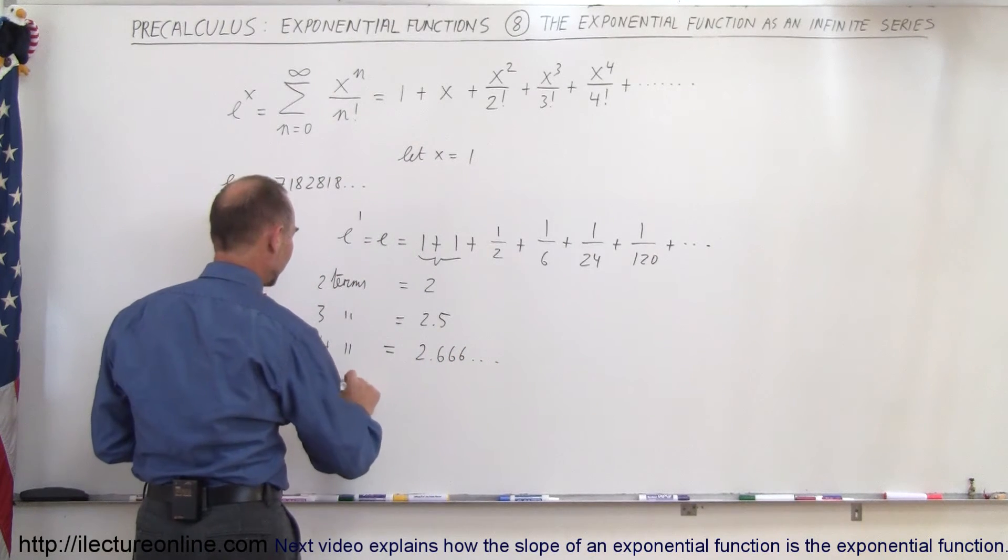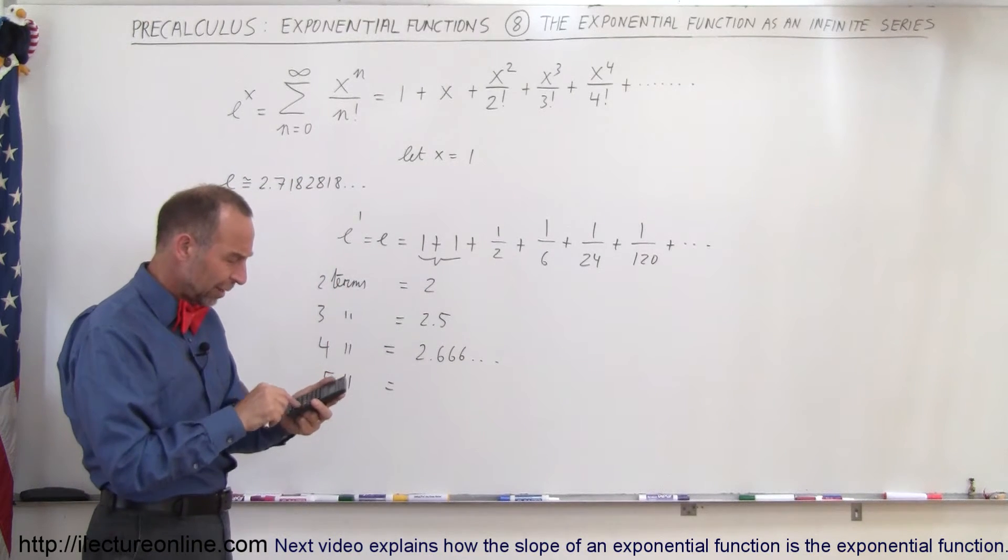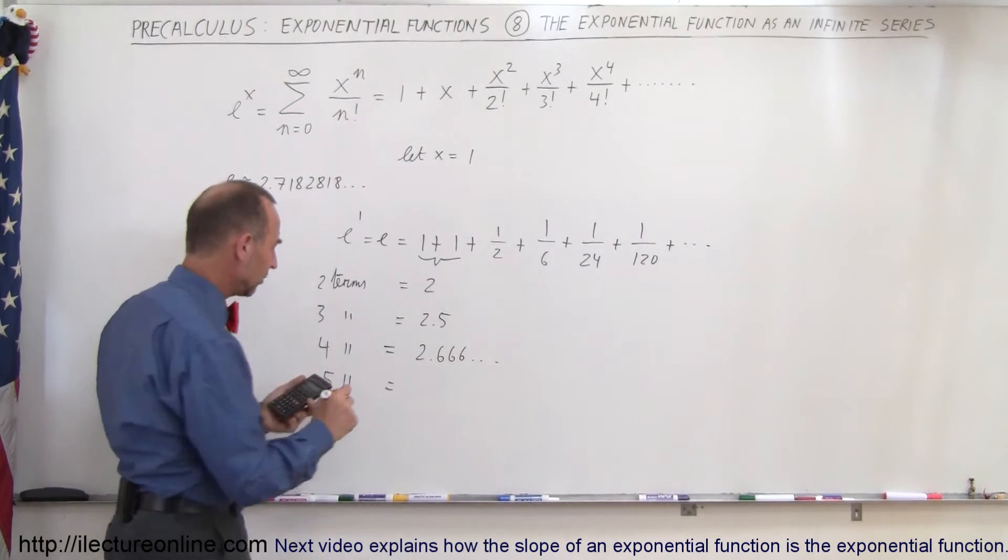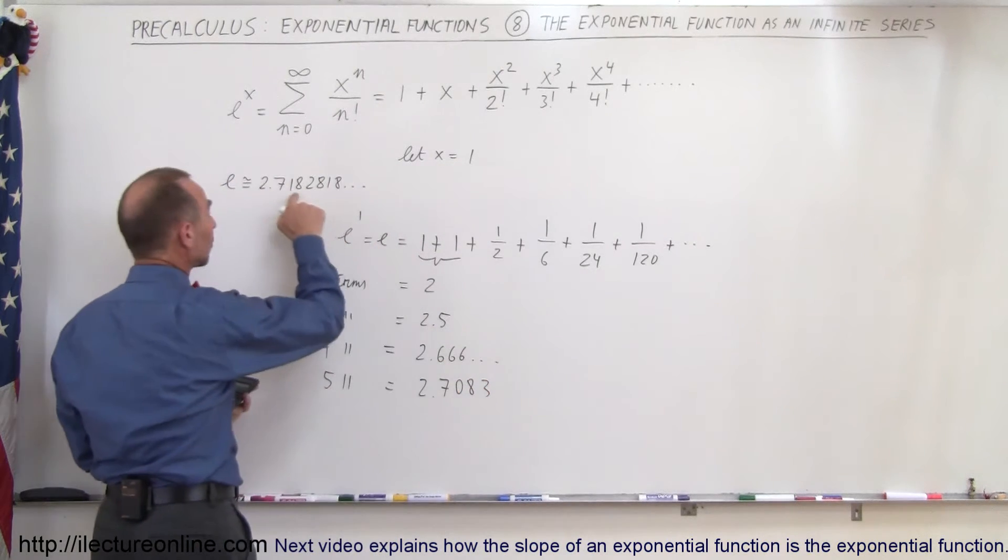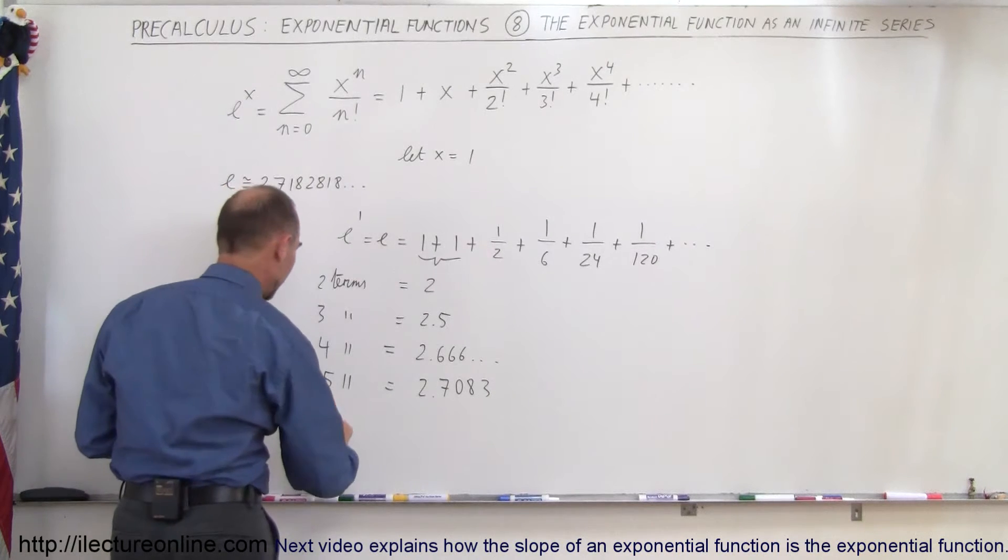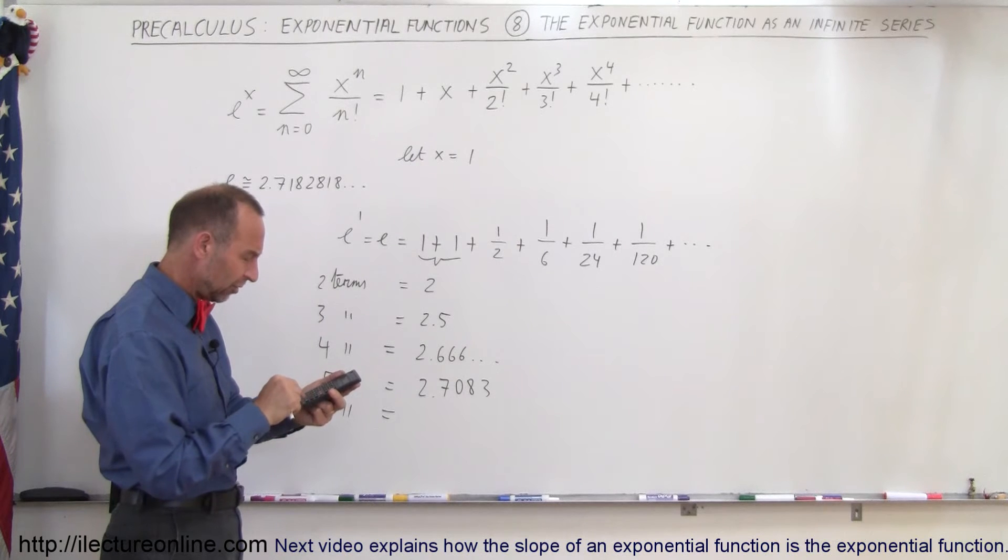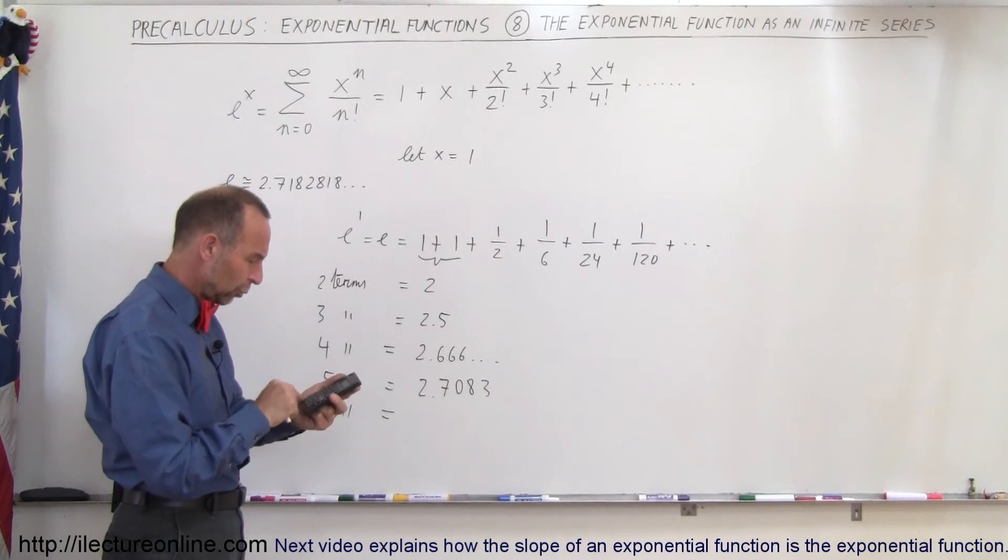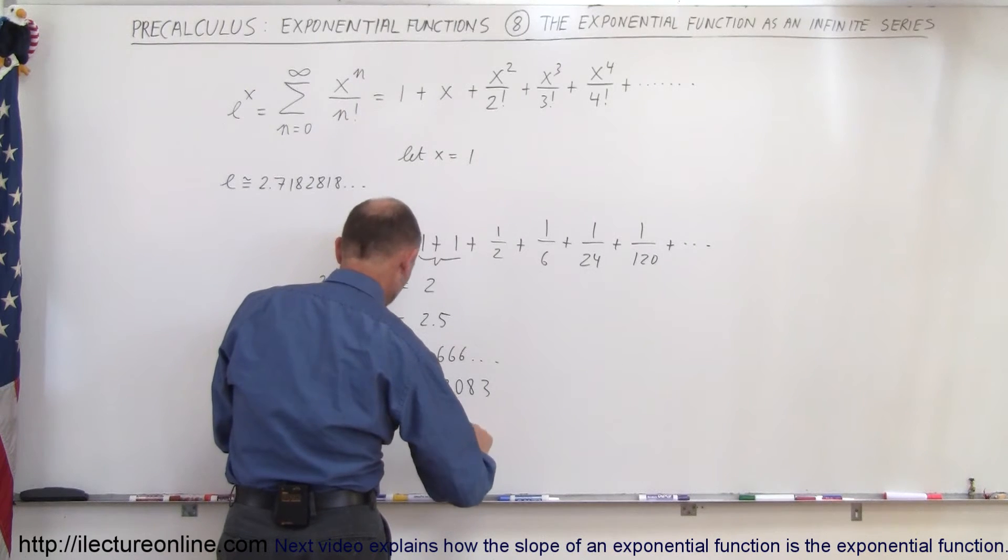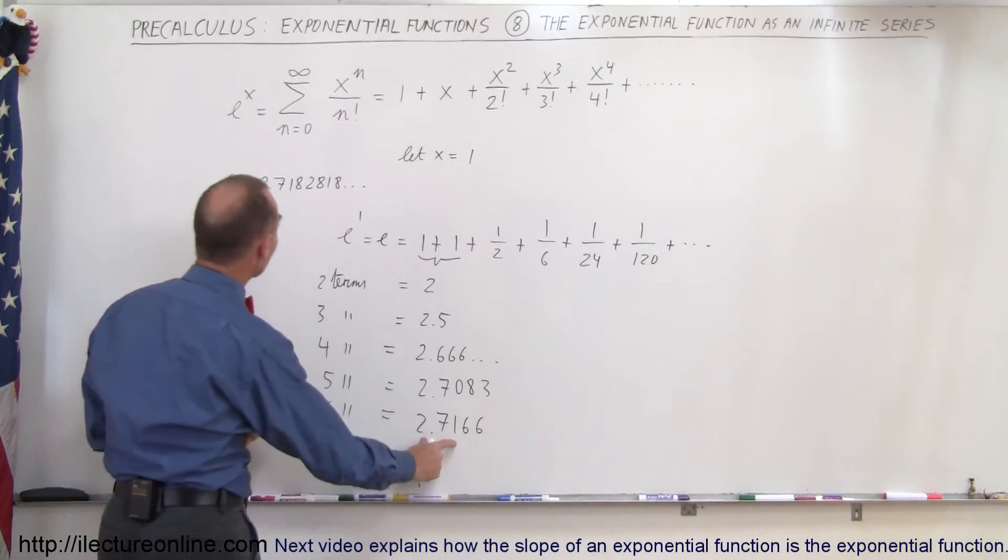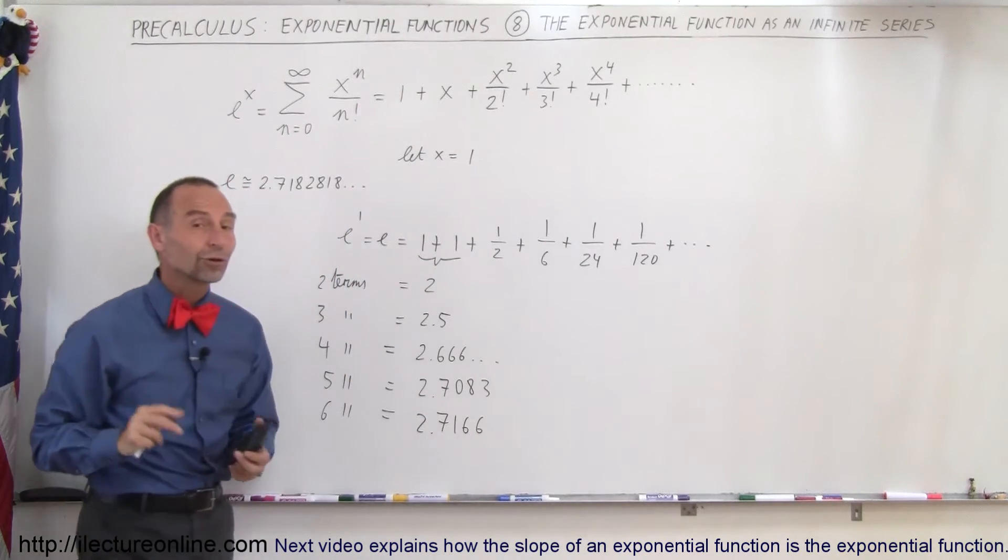When we take five terms, we have to add another 1 over 24 to that, so we go plus 1 divided by 24, and we get 2.7083. You can see that we're zeroing in on this number. When we take six terms, we have to add 1 divided by 120, so plus 1 divided by 120, and we get 2.7166 and so forth. You can see that slowly but surely, we're zeroing in on the actual value for the number e.